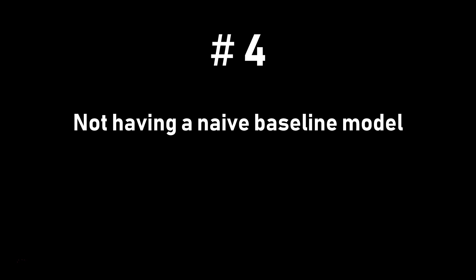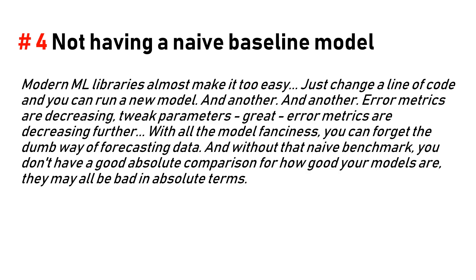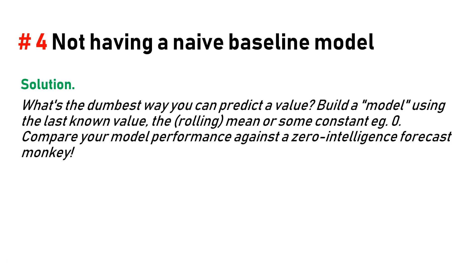Number four: not having a naive baseline model. Modern machine learning libraries make it too easy — just change a line of code and you can run a new model, tweak parameters, and see error metrics decreasing. With all the model fanciness, you can forget the dumb way of forecasting. Without that naive benchmark, you don't have a good absolute comparison for how good your models are — they may all be bad in absolute terms. Solution: what is the dumbest way you can predict a value? Build a model using the last known value, the rolling mean, or some constant like zero.